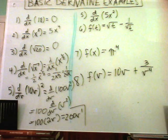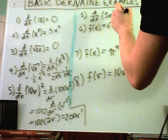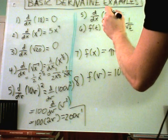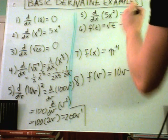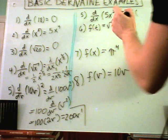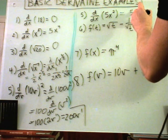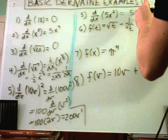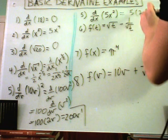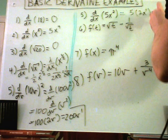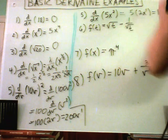For our next example here we have basically the same idea. There's a five inside so we can pull that out front. The derivative of x squared is simply 2x to the first. The 2 comes out front, leave the x alone to the first power, and if we simplify that will give us 10x to the first.